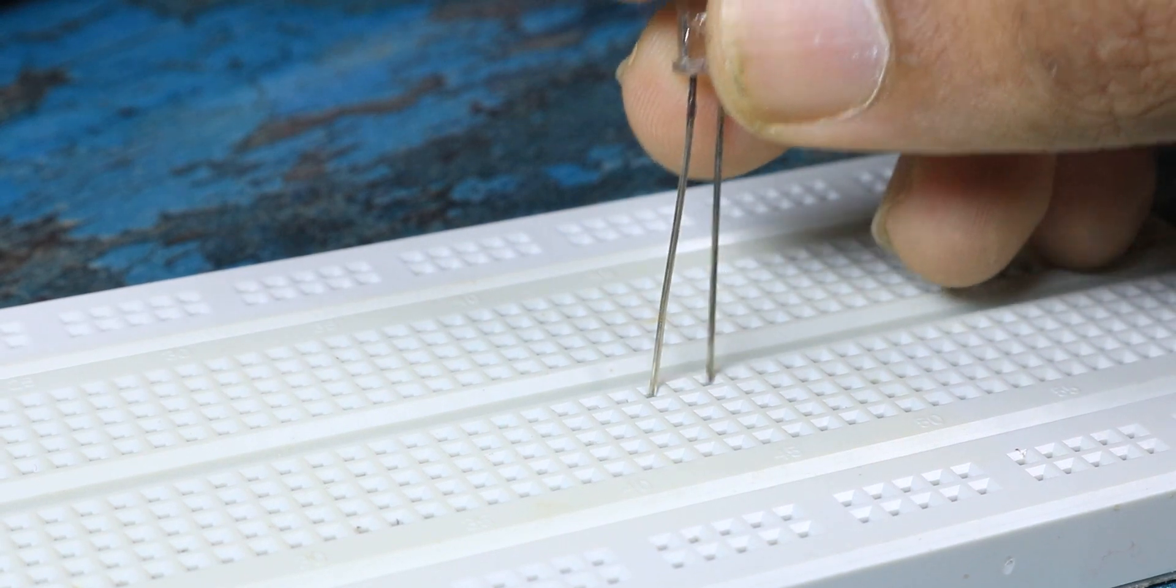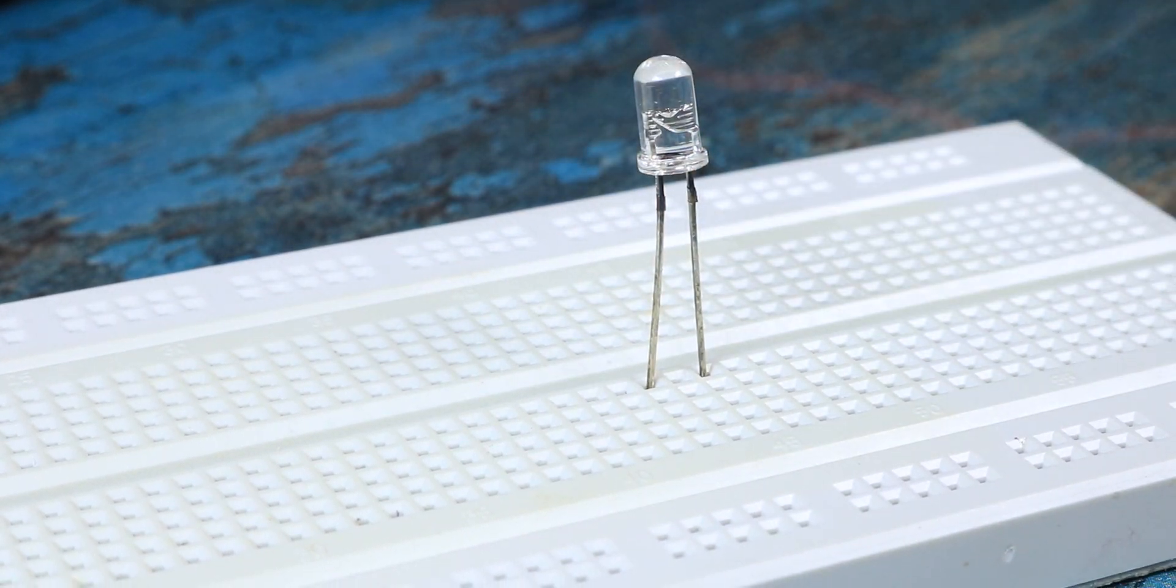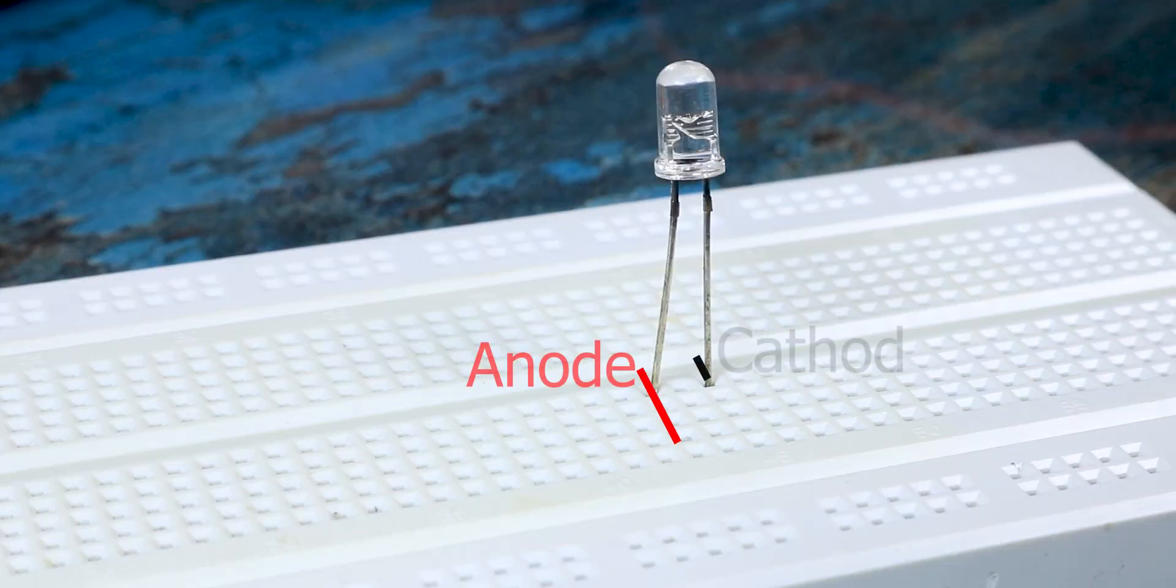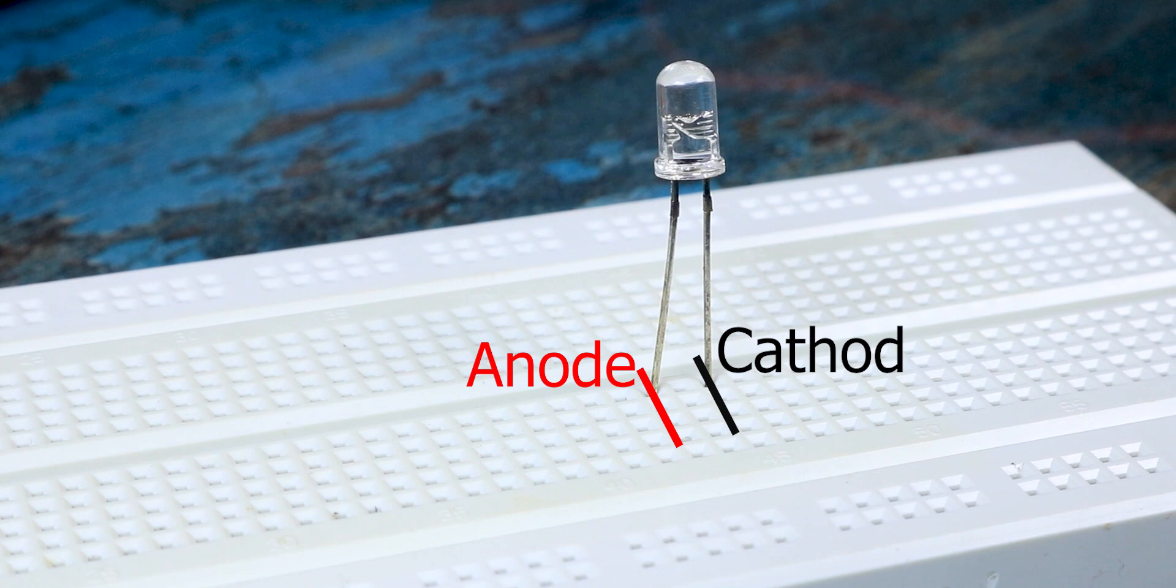So let's say if you want to connect your LED to the breadboard, you will connect it like this and not like this, such that this entire line will be anode of the LED and this entire line will be cathode of your LED.